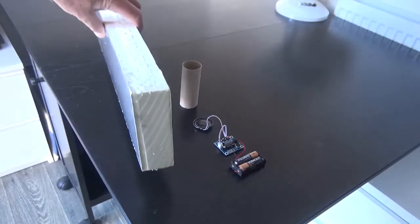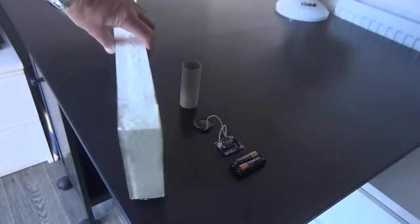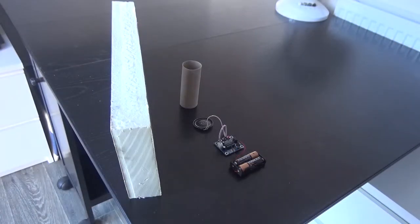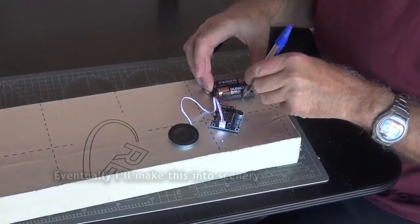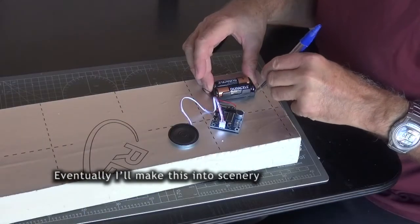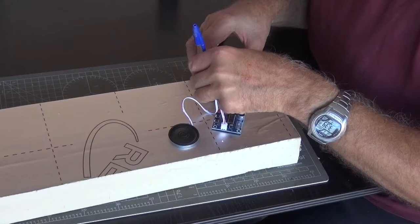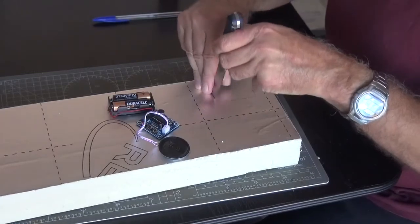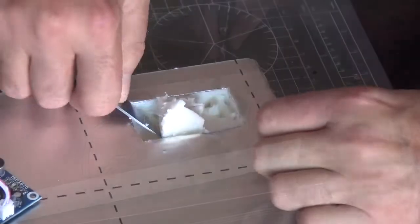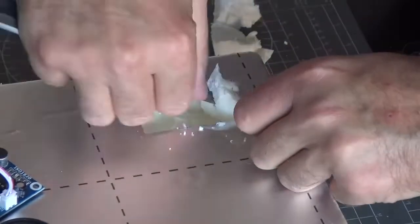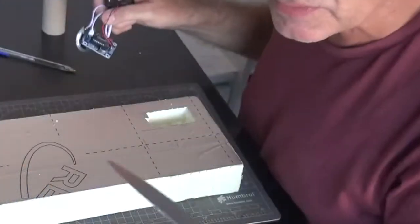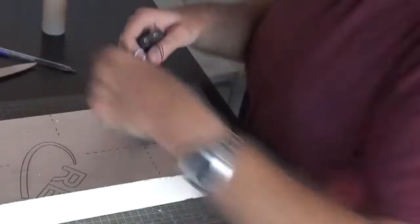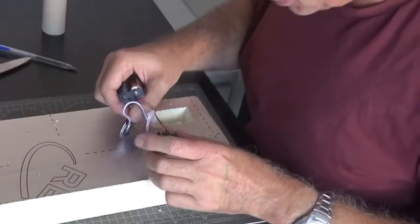What I'm planning to do now is build it into some insulation foam board. This is 15 millimeters thick. Be careful when using knives, of course. And one thing I did realize is that you mustn't put this on there with the batteries connected.